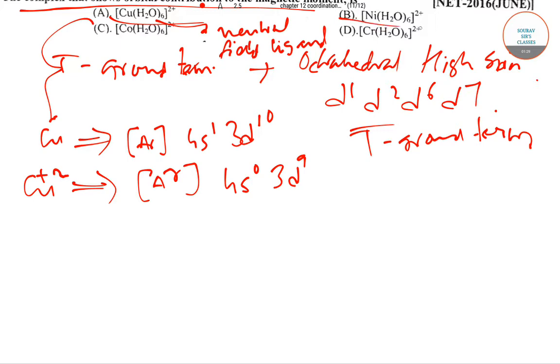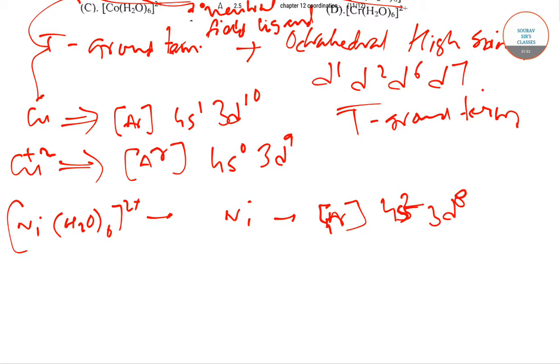Coming to option number B we have [Ni(H2O)6]2+ where Ni has an electronic configuration of [Ar] 4s2 3d8. So Ni+2 will have [Ar] 4s0 3d8.